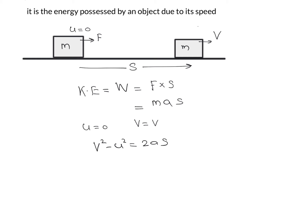We can write the value of a × S in this situation as equal to (V² − U²) / 2, where U = 0, so a × S = V² / 2.